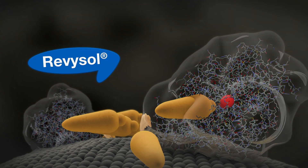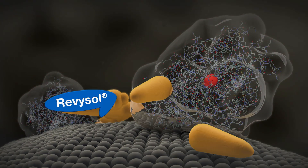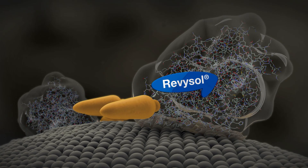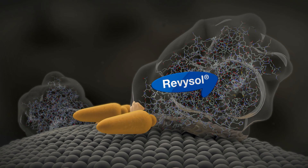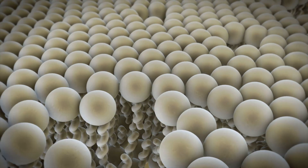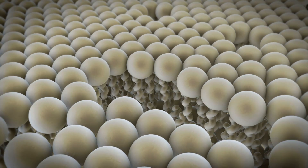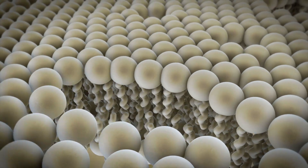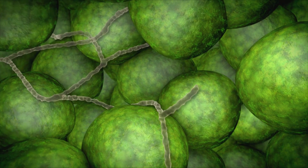Revisol advances very rapidly to the site of ergosterol production and blocks C14-demethylase extremely effectively. Production of ergosterol is stopped. As a consequence, new structurally stable membranes can no longer be produced. Cracks appear in the membrane. The hyphae collapse. The fungus dies.